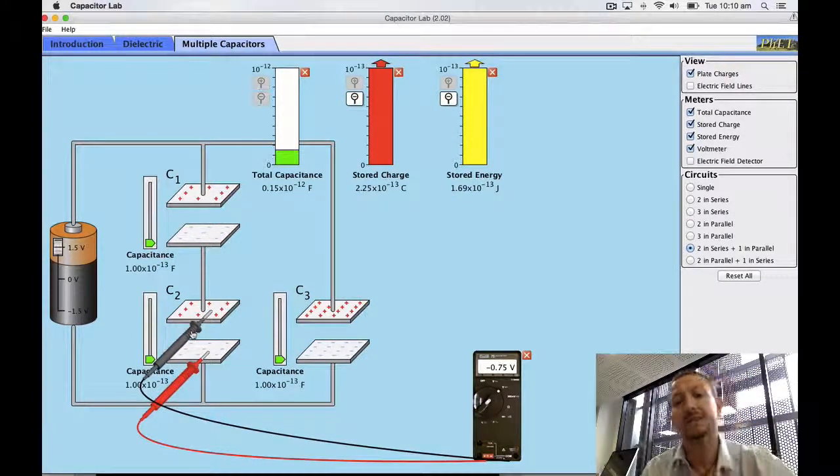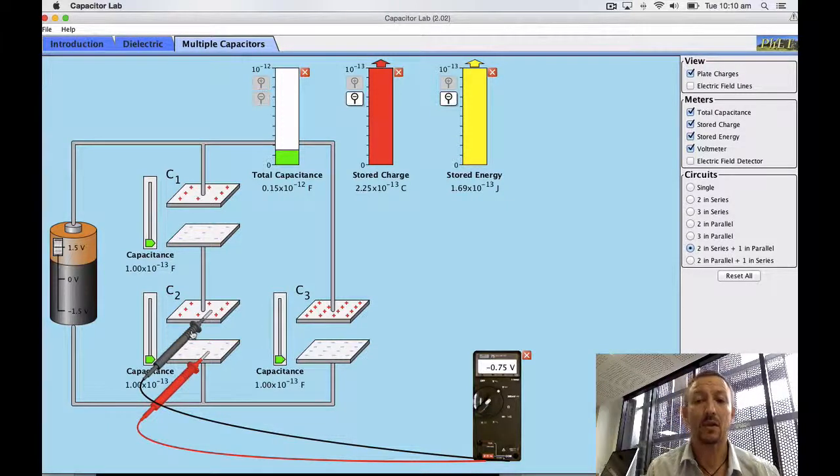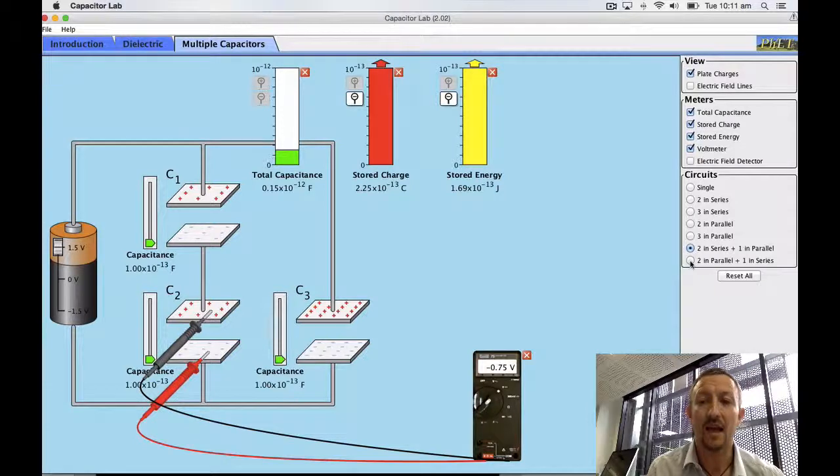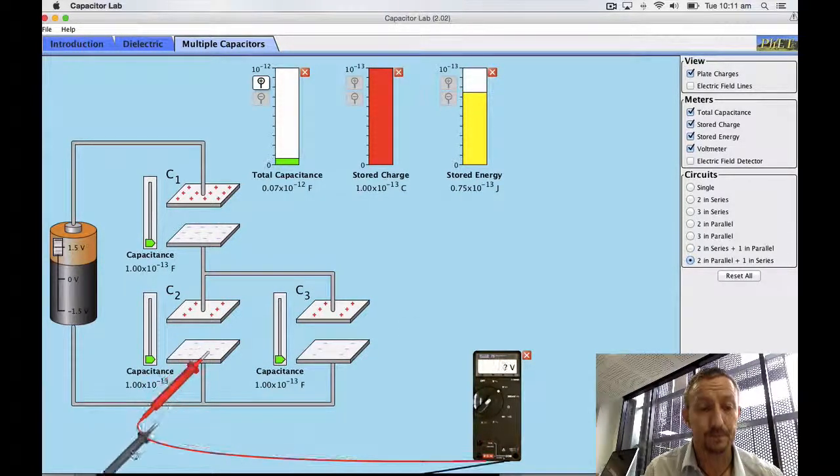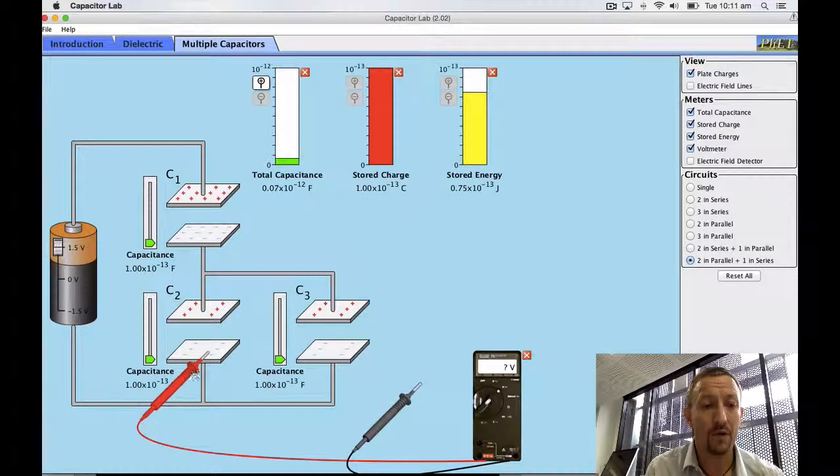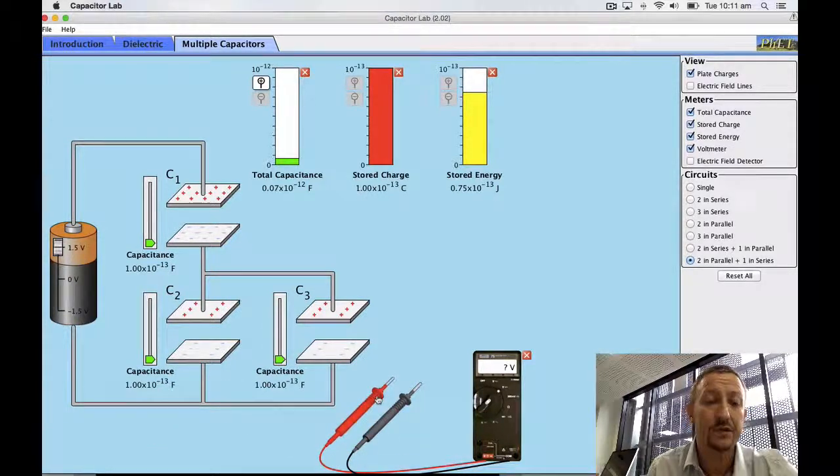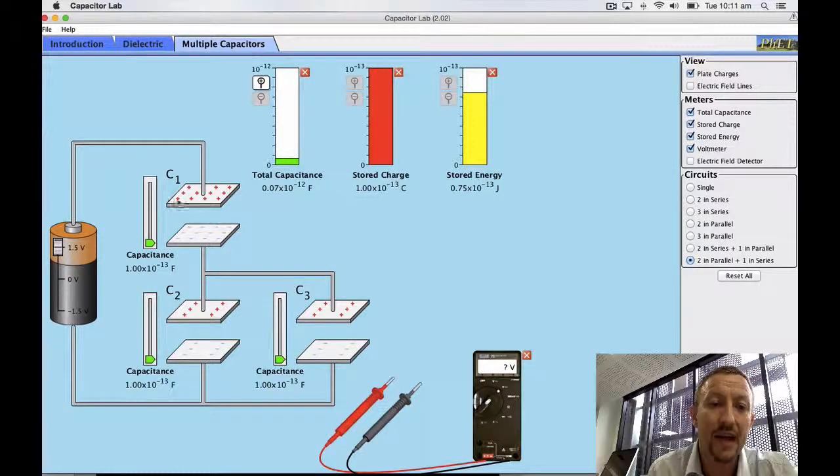I've still got the same amount of voltage going in across each area. So let's change it and put two parallels in and one in series. So here I've got my system where I've got 1.5 coming across, so basically I should have 1.5 in each of the various branches.